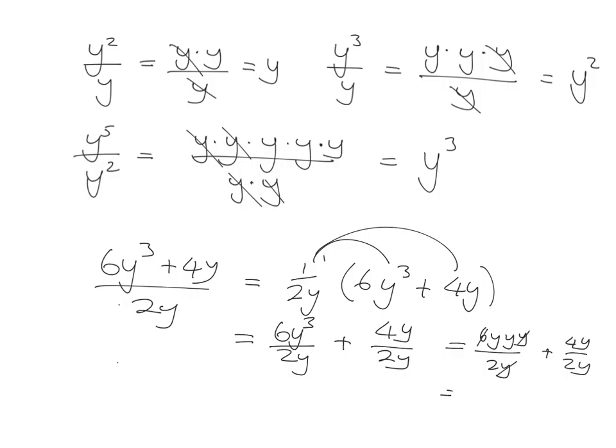y cancels with a y, and the 2 goes into the 6 three times, so I've got a 3y squared here. 4 goes into 2 twice, and these y's cancel with each other, so I've got 2 over 1 which is just 2.